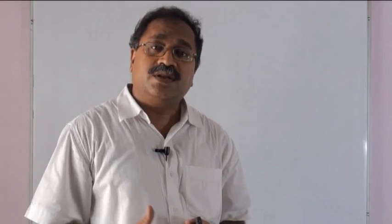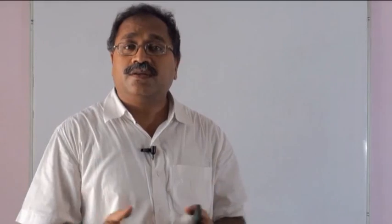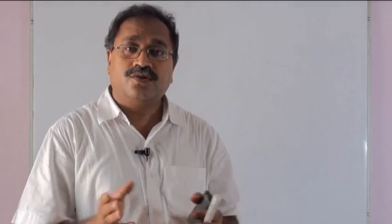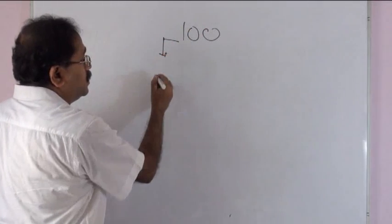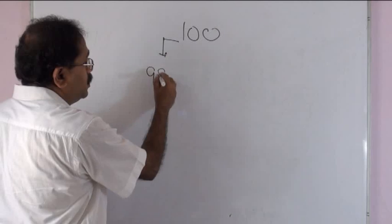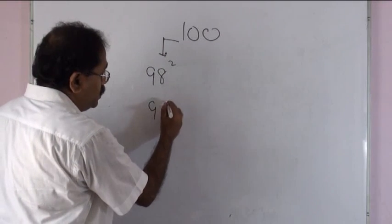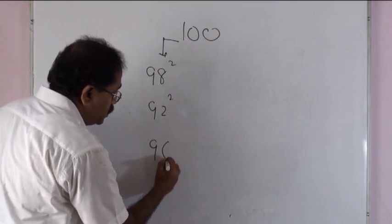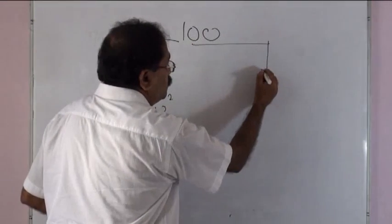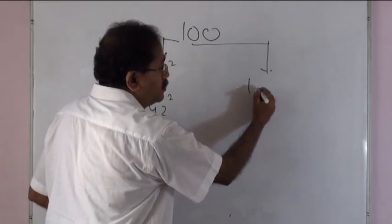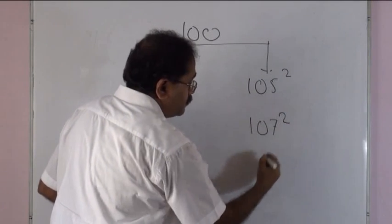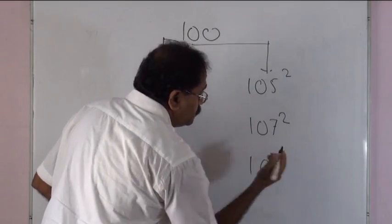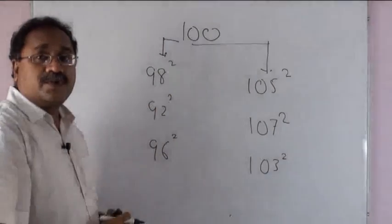The numbers which are closer to 100 — one group is less than 100, the other is more than 100. What is the similarity in these two approaches, and how are they different? Numbers less than 100 include 98 squared, 92 squared, or 96 squared. Numbers greater than 100 include 105 squared, 107 squared, and 103 squared.